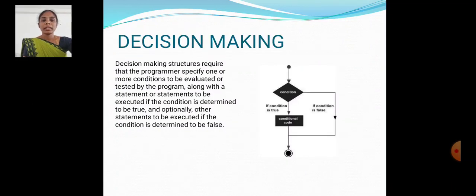Decision making. Decision making structures require the program to specify one or more conditions to be evaluated or tested by the program, along with statements to be executed if the condition is determined to be true, and optionally other statements to be executed if the condition is determined to be false.